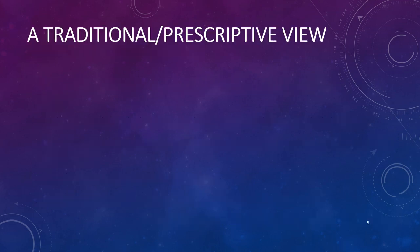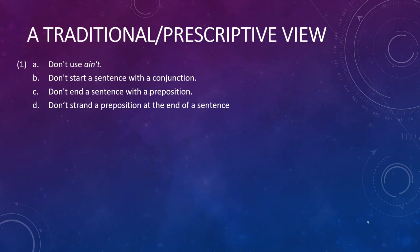A traditional view of grammar is as a list of ten commandments for language — things that you probably shouldn't do. Traditional grammars are often associated with prescriptive views of language. An extract from a traditional grammar might include: don't use ain't, don't start a sentence with a conjunction, don't end a sentence with a preposition, and don't strand a preposition at the end of a sentence. While this kind of grammar is quite good at telling you what not to do, it isn't really very good at telling you what people actually do in practice.